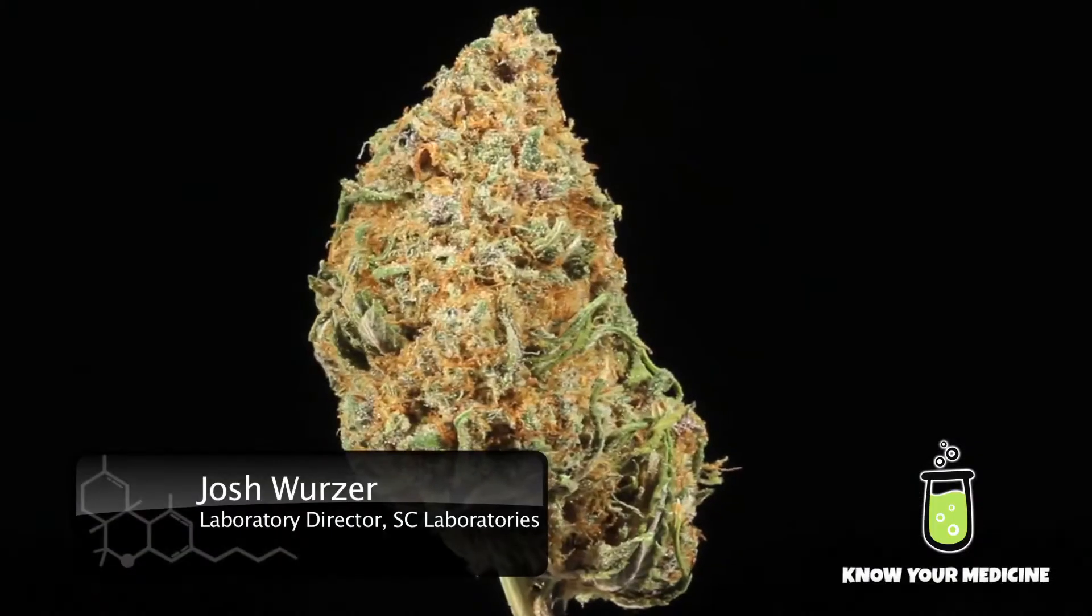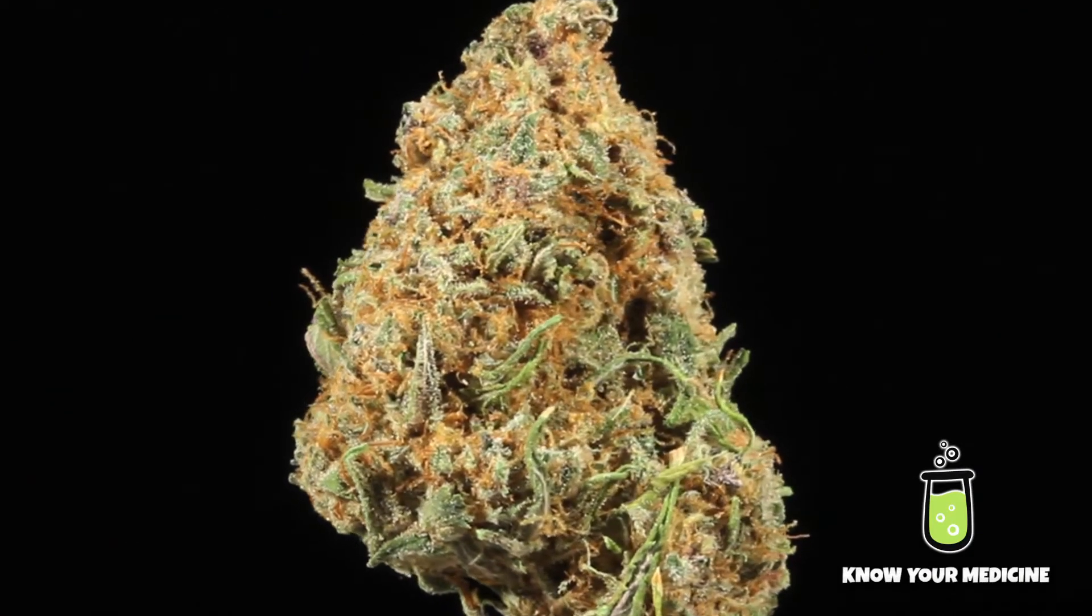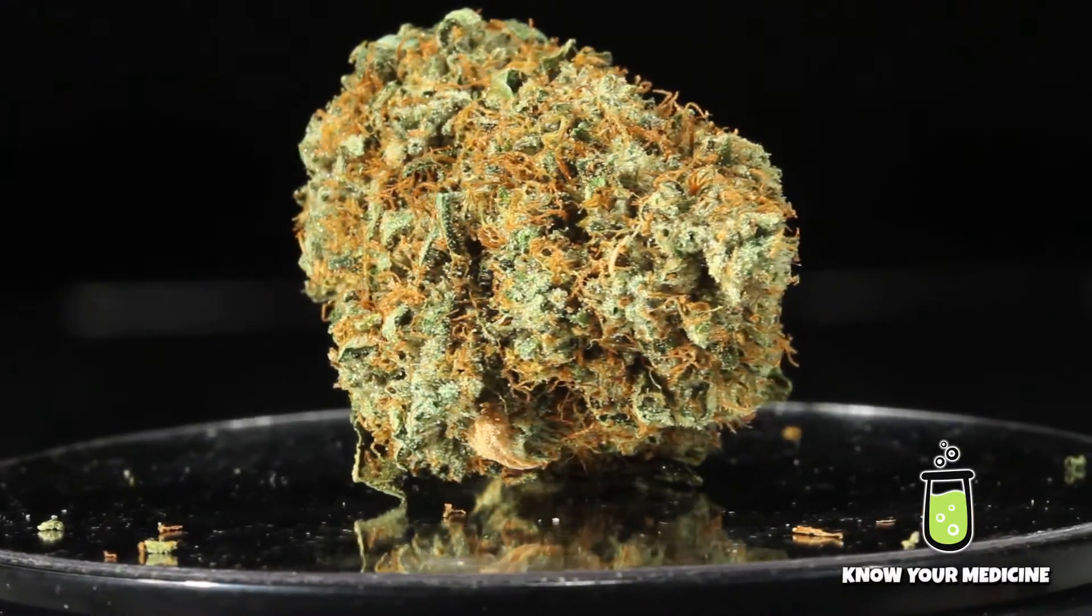The cannabis plant produces several terpenoids that give it various scents. You have cannabis plants that smell like bubble gum, grape, lemon, spices. Cannabis is an interesting plant in that it can produce a wide range of terpenoids.